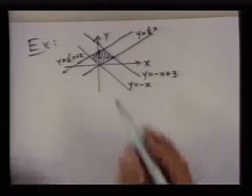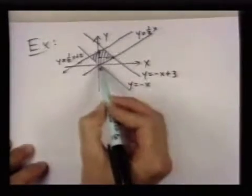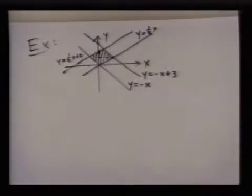Because from here to here, you're bounded by these two lines, and from here to here, you're bounded by those, and then you're bounded by these. It's kind of a mess.